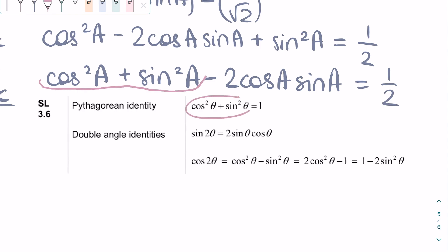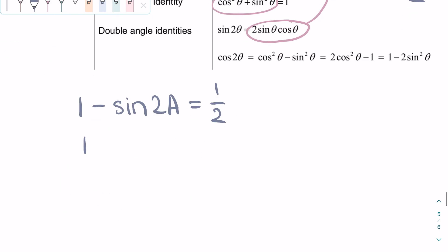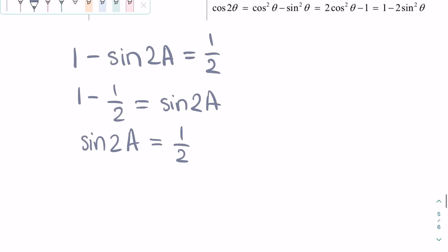And 2 sine A cosine A is actually sine 2A, as this is a double angle identity. So we can rewrite this whole equation as 1 minus sine 2A is equal to 1 half. We can rearrange it again, and we get sine 2A is equal to 1 half.